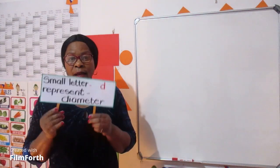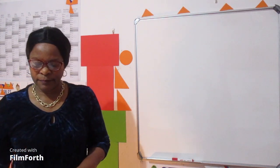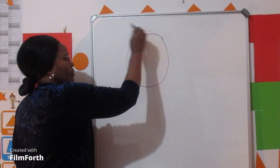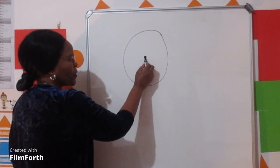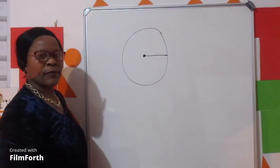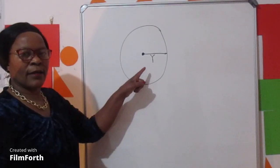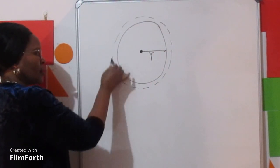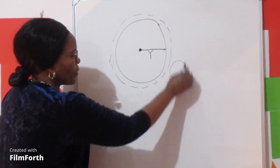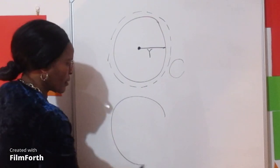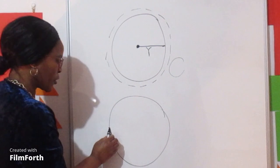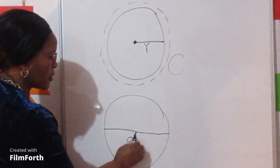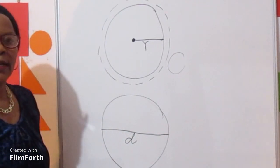Let's look at this circle — I am drawing a circle now. The distance from the center of the circle to the edge of the circle is called radius, and r is written as a small letter. The distance around the circle is called circumference and is written with the capital letter C. The distance from the edge of the circle across the center to the other edge is called diameter and is written with the small letter d.